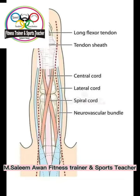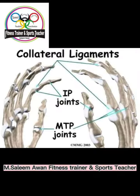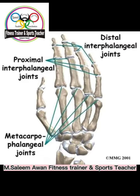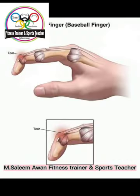Let us discuss the clinical aspects of carpal bones, starting with scaphoid fracture. The scaphoid is the most commonly fractured carpal bone and usually occurs due to a fall on an outstretched hand. The fracture occurs at the narrow waist of the scaphoid. Clinically, scaphoid fracture presents with tenderness in the anatomical snuff box — the depression found on the dorsal side of the wrist when you abduct your thumb.